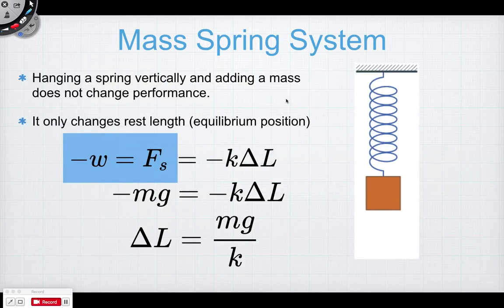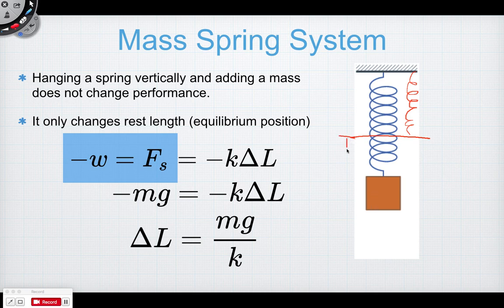One helpful concept: without a mass, a hanging spring would just sit at its natural length. When you hang a mass on it, it stretches downward. We call that change in length delta l — it's the same idea as delta x, but since we're talking about length here.